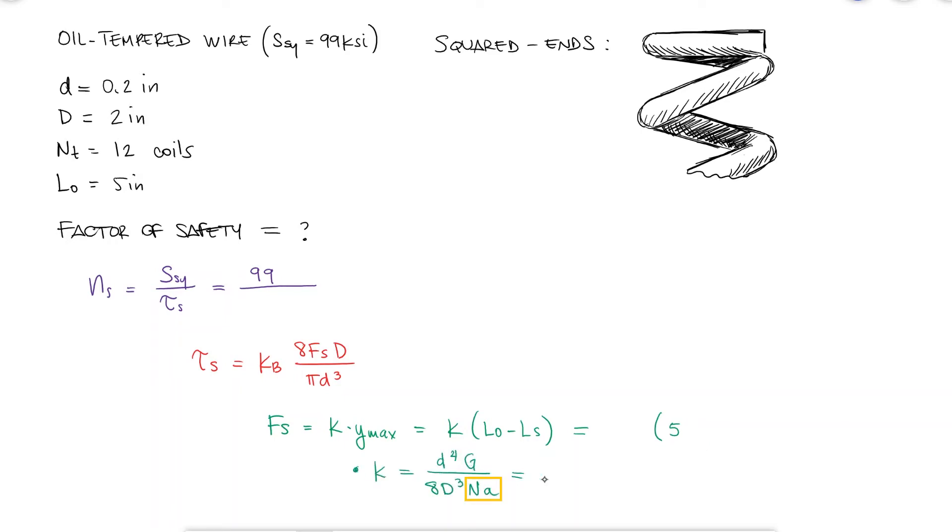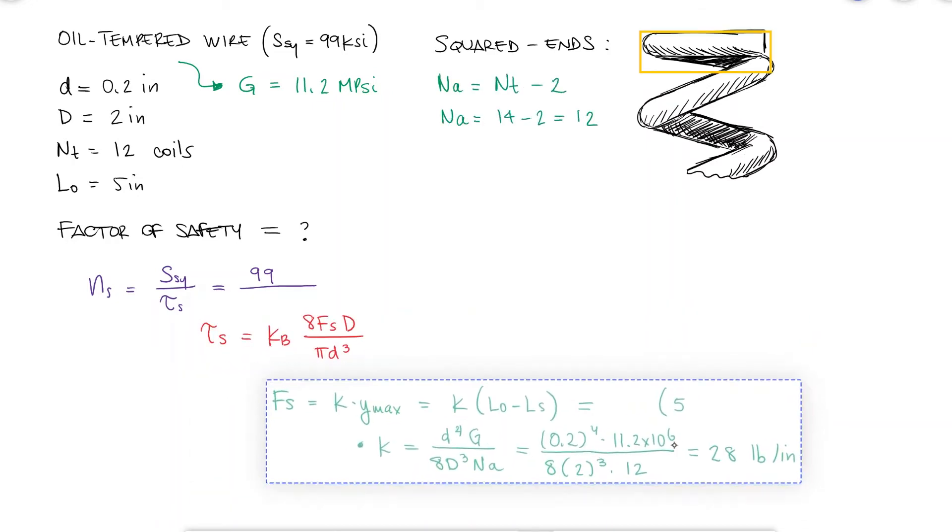The number of active coils, or the coils that will actually resist the compression of the spring, will be equal to the total number of coils minus 2, one at each end that don't resist the compression.